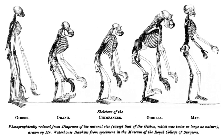Selection is the process by which heritable traits that make it more likely for an organism to survive and successfully reproduce become more common in a population over successive generations. It is sometimes valuable to distinguish between naturally occurring selection — natural selection — and selection that is a manifestation of choices made by humans — artificial selection. This distinction is rather diffuse, but natural selection is nevertheless the dominant part of selection. The natural genetic variation within a population means that some individuals will survive more successfully than others in their current environment.